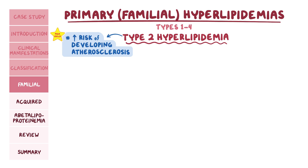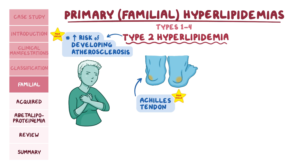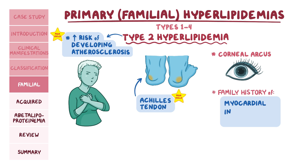Individuals may present with coronary artery disease as early as 20 years old. In addition, tendon xanthomas, particularly on the Achilles tendon, and corneal arcus are common in this type. On the exam, think of this disorder in someone with a family history of myocardial infarction at an early age.